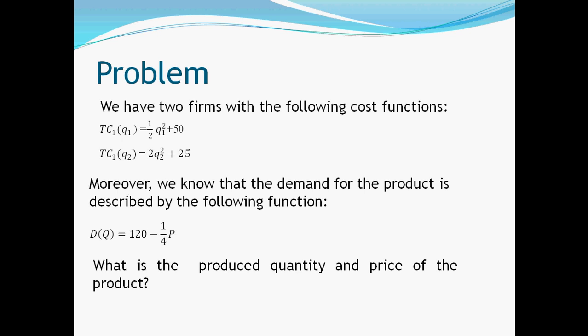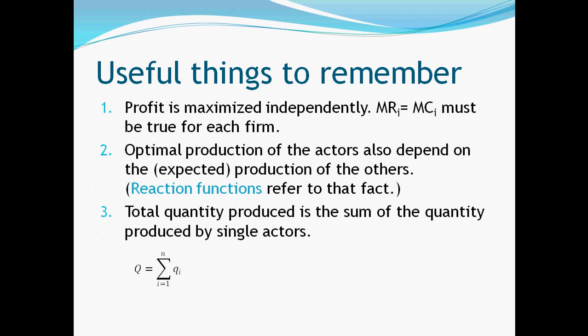Our task is to calculate the market price and the total quantity produced as a whole. Before start solving this problem and problems like this one, there are a couple of things that are useful to know. First of all, in a Cournot Oligopoly setting, each firm maximizes their profit individually. So marginal revenue must equal marginal cost in the case of each firm in the market.